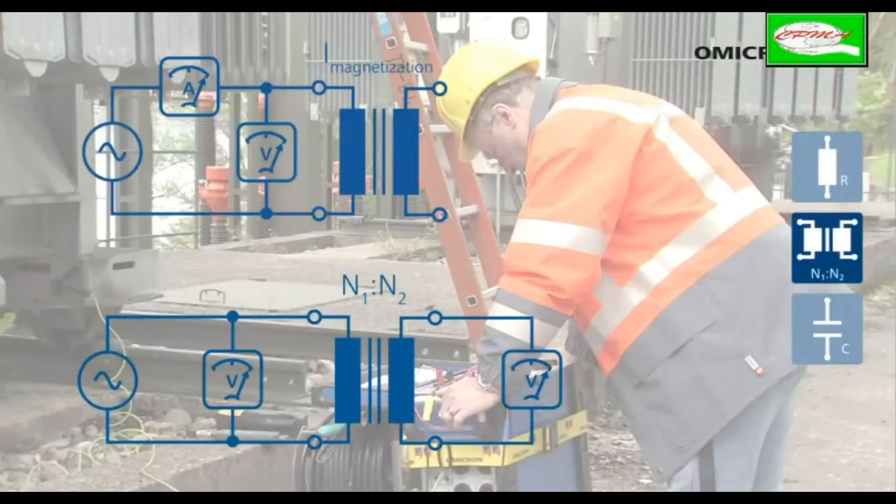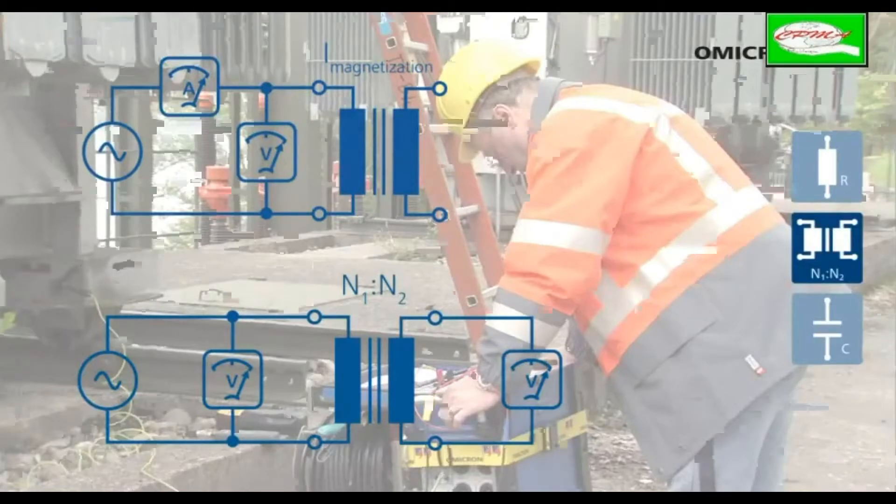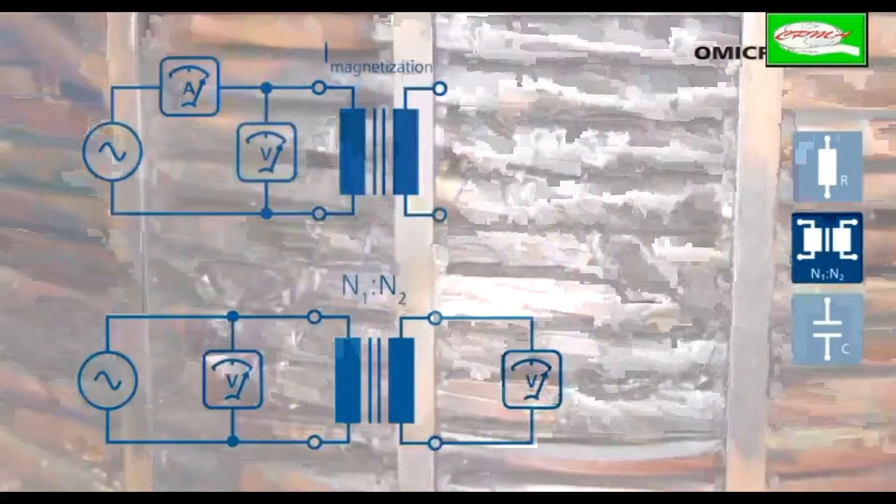Medir a relação e corrente de magnetização ajuda a identificar curtos circuitos entre espiras do enrolamento.